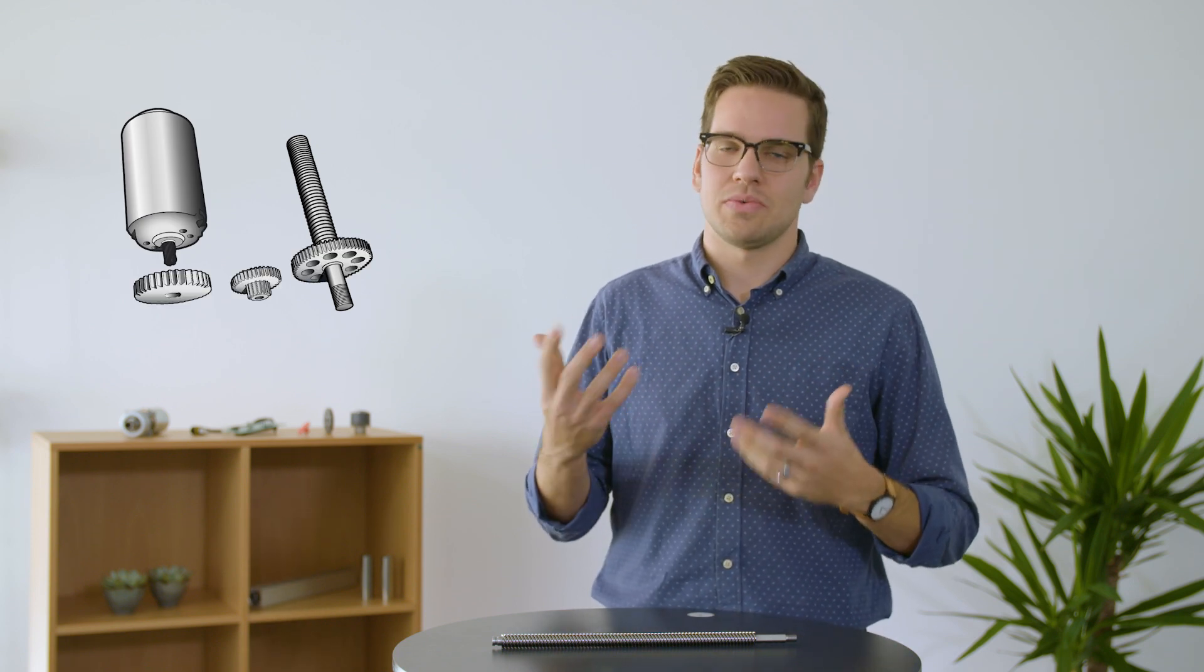Inside an actuator there are three main components: the spindle, the DC motor, and the gears. They look a lot like this when assembled.